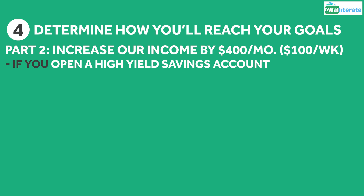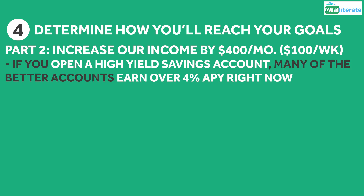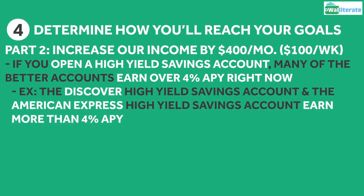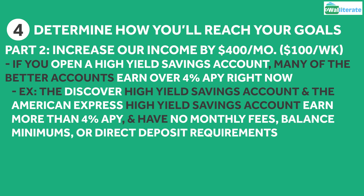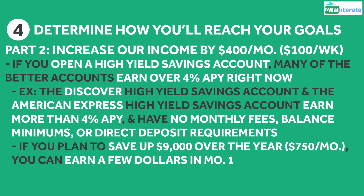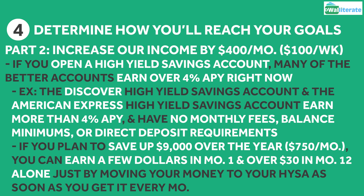If you also open a high-yield savings account, many of the better accounts will earn you over 4% APY, like the Discover high-yield savings account and the American Express high-yield savings account, which both have no monthly fees, balance minimums, or requirements for direct deposit. If you're saving up a total of $9,000 over the year, or $750 a month, you could earn a few dollars by the end of month 1 and over $30 in month 12 alone just by moving the money you save to that high-yield account as soon as you get it every month. I'll link to some videos on cashback credit cards and high-yield savings accounts towards the end of this video.